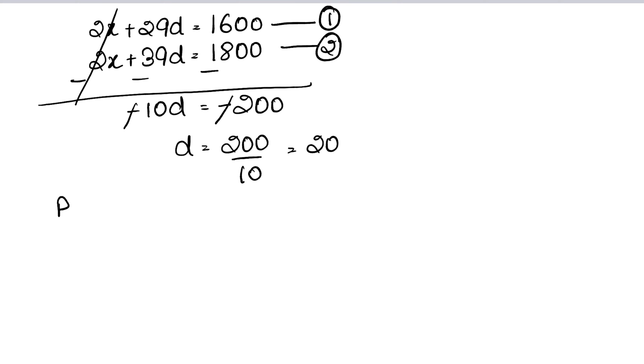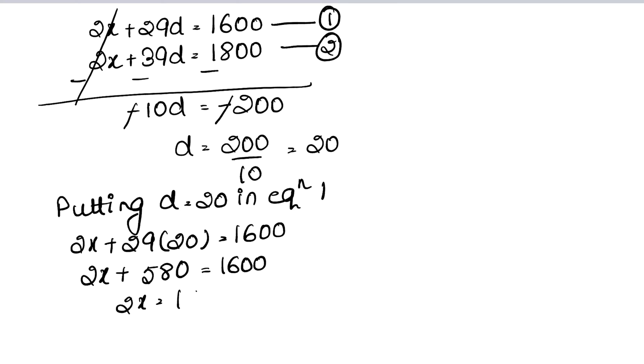Now we can easily find x. Putting d equals 20 in equation 1: 2x plus 29 into 20 equals 1600. So 2x plus 580 equals 1600. Therefore 2x equals 1600 minus 580 equals 1020. So x equals 1020 upon 2, that is 510.